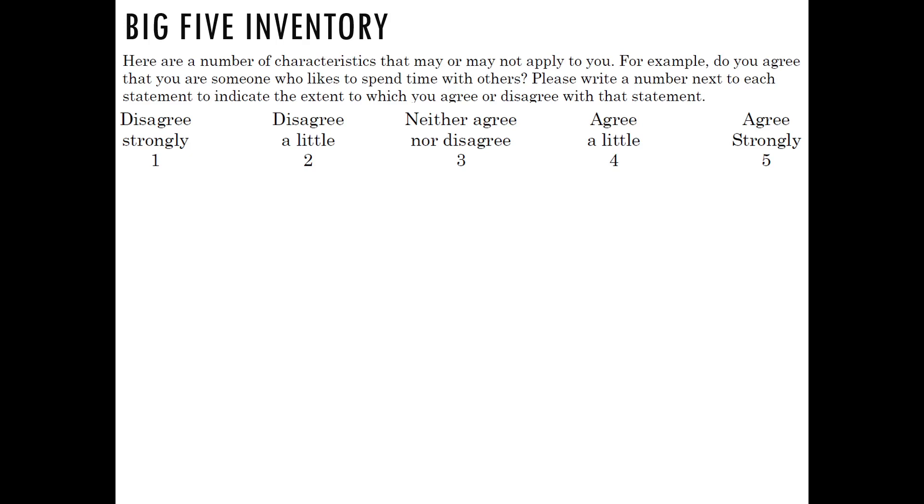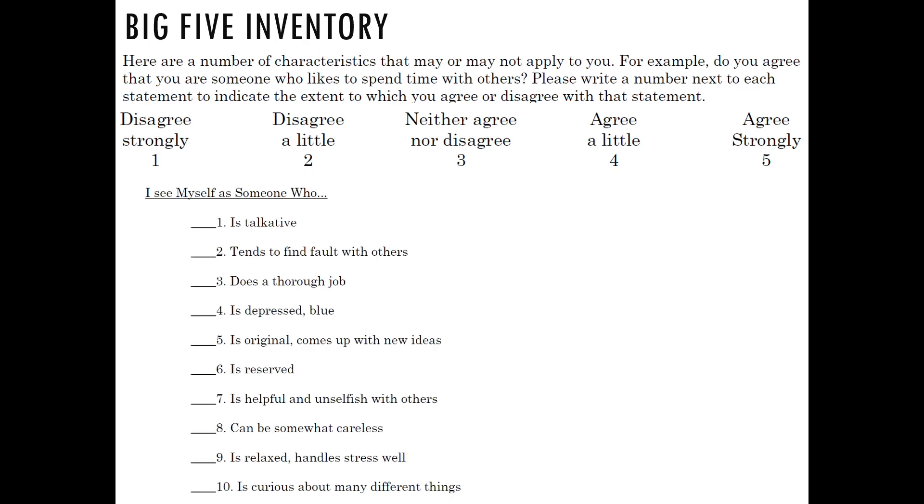Here are the first 10 questions. Before each statement, think to yourself 'I see myself as someone who.' Number one: is talkative. Number two: tends to find fault with others. Three: does a thorough job. Four: is depressed, blue. Five: is original, comes up with new ideas. Six: is reserved. Seven: is helpful and unselfish with others. Eight: can be somewhat careless. Nine: is relaxed, handles stress well. Ten: is curious about many different things.